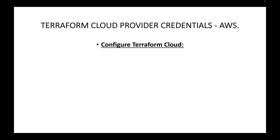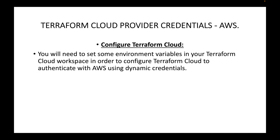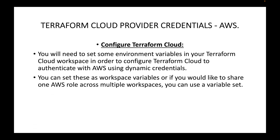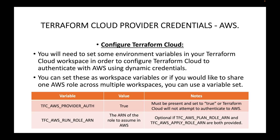Step three is to configure the Terraform Cloud. Steps one and two are done on AWS; this third step is done on the Terraform Cloud side. You will need to set some environment variables in your Terraform Cloud workspace to configure Terraform Cloud to authenticate with AWS using dynamic credentials. You can set these as workspace variables, or if you want to share one AWS role across multiple workspaces, you can use a variable set — we will cover variable sets in upcoming sessions.